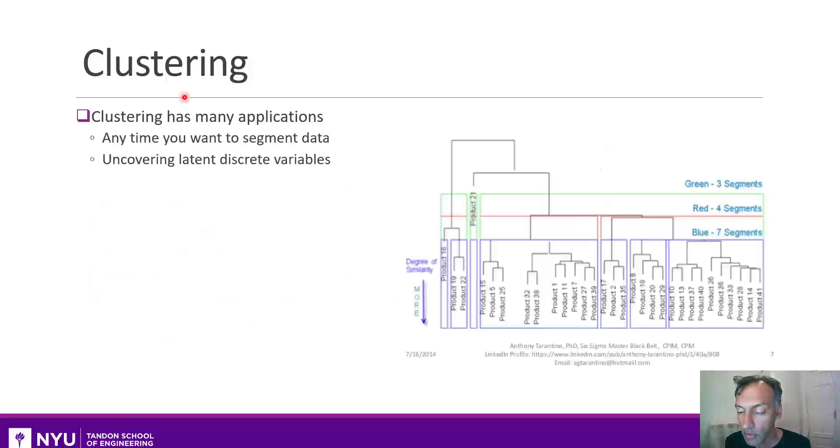That example on the previous slide was just some synthetic toy data, but clustering has many real applications. It's basically, and you can use it any time you want to segment data or uncover latent categories. So for example, here it could be used in product classification or in marketing. We might want to group certain types of products together.